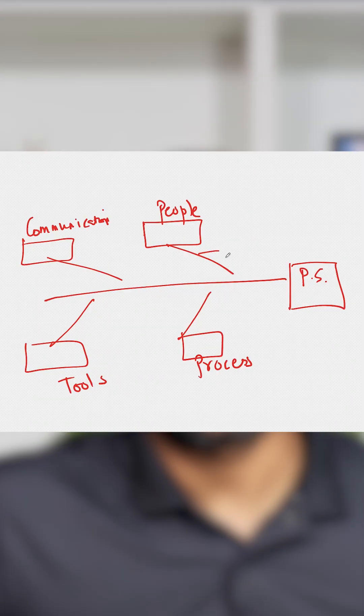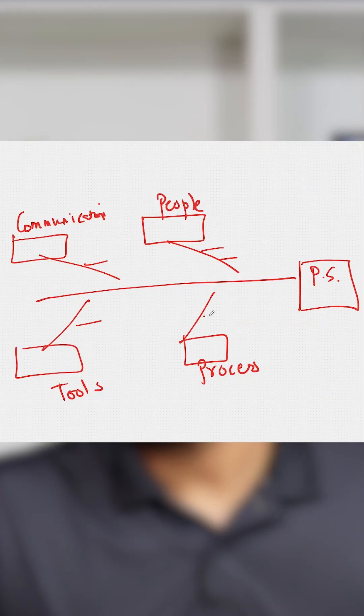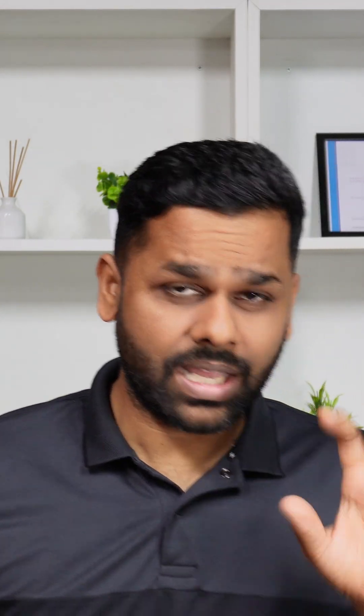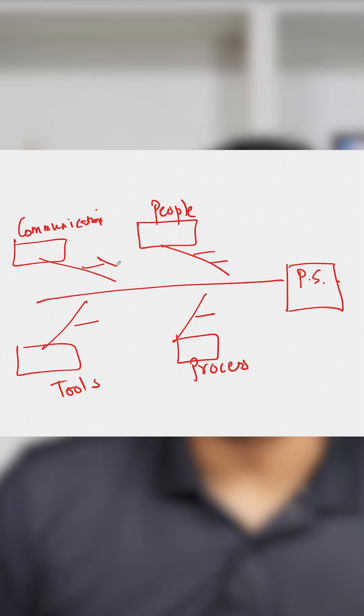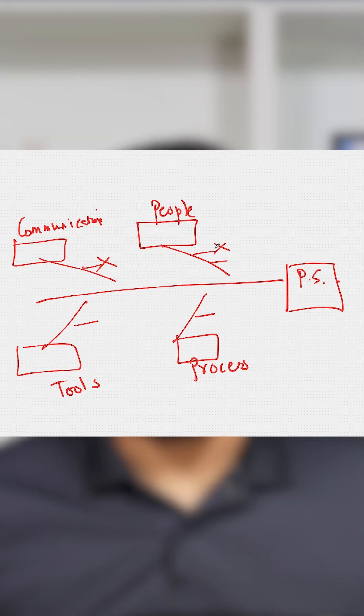Then within each category, try to figure out the branches — was it lack of skill? Was it lack of training? Was it lack of understanding? Was it lack of communication? Was the tool not working? Is the process not available? Figure out what could result in this problem, and then one by one start eliminating those that are not applicable.